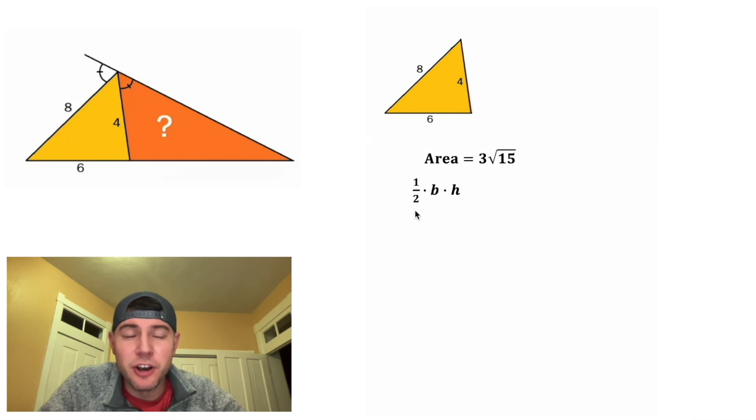But the area of a triangle is also equal to 1 half base times height, where this is the height of the triangle right here. So this will also equal 3 root 15. B stands for the base, and the base of this triangle is equal to 6. And then 1 half times 6 is equal to 3. And after we divide both sides by 3, we get H is equal to the square root of 15. And we can update this H to be square root of 15.